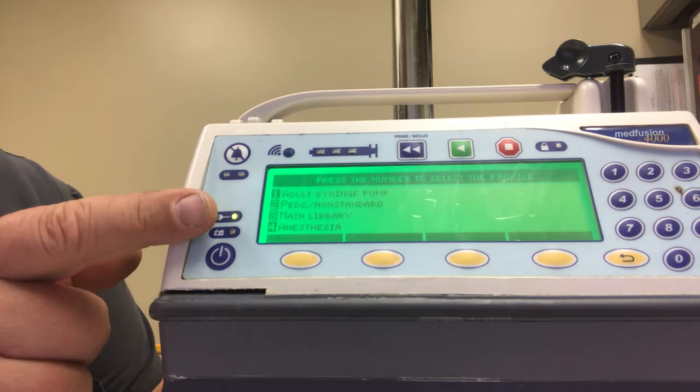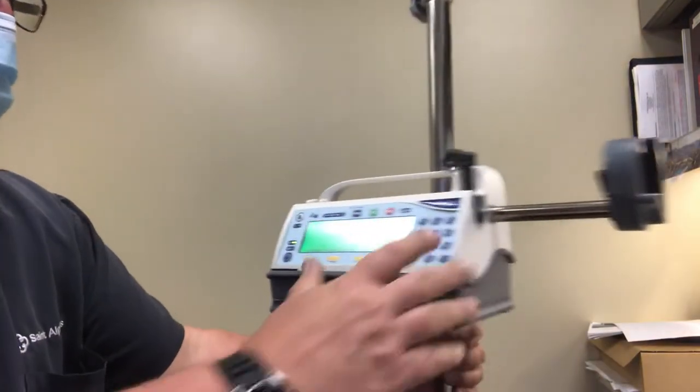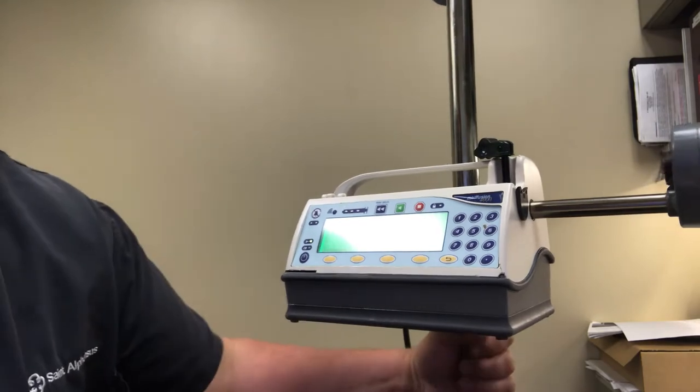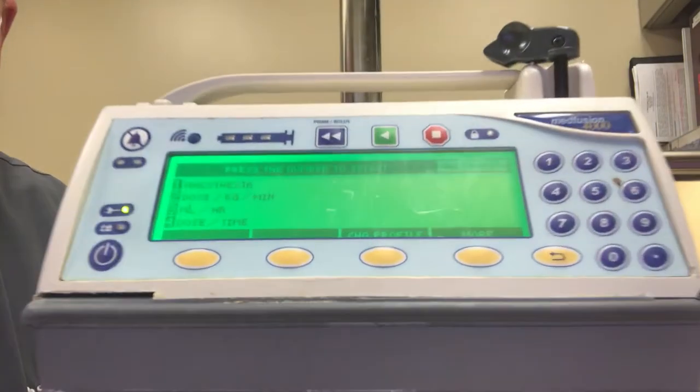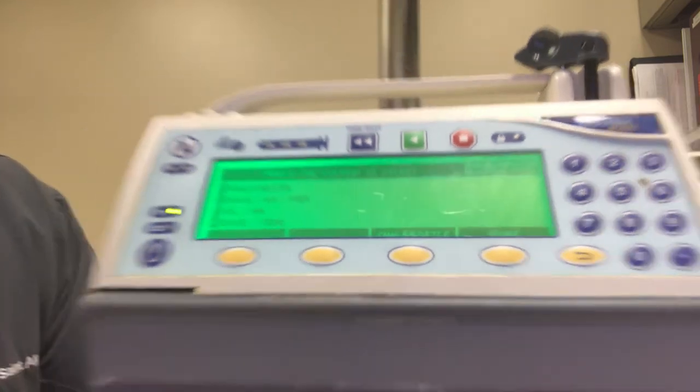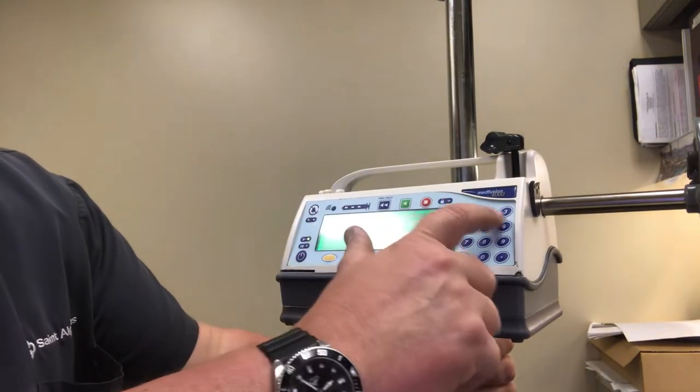And you're going to pick the fourth one where it says anesthesia, then it's going to ask you mils per hour, dose rate, so you're going to pick mils per hour which is option number three.